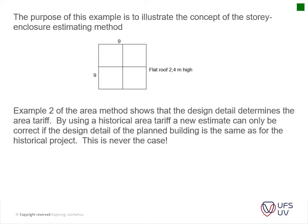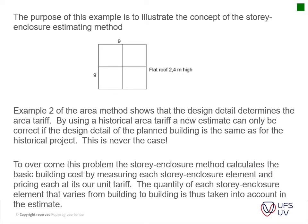Example 2 of the area method shows that the design detail determines the area tariff. By using a historical area tariff, a new estimate can only be correct if the design detail of the planned work is the same as the historical project. This is never the case, so to overcome the problem, the story enclosure method calculates the basic building cost by measuring each story enclosure element and pricing it at its own unit tariff, taking into account the quantity of each element that varies from building to building.